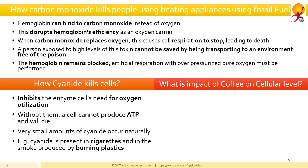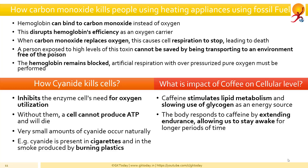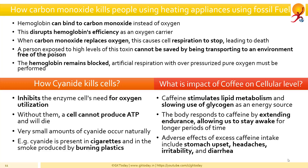What is the impact of coffee or caffeine at the cellular level? Caffeine affects cells by stimulating lipid metabolism and slowing the use of glycogen as an energy source. As a whole, the body responds to caffeine by extending endurance, allowing us to stay awake for longer periods of time or performing extra activities. Adverse effects of excess caffeine intake include upset stomachs, headaches, irritability, and diarrhea.